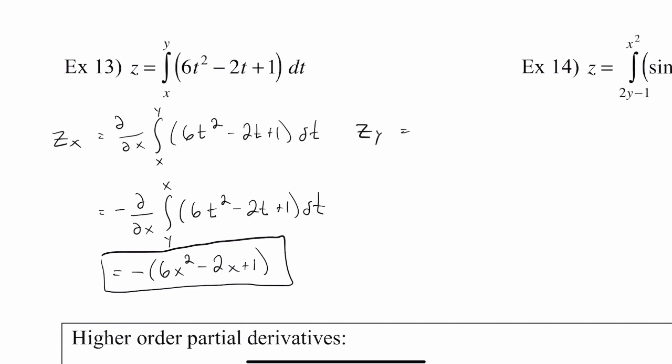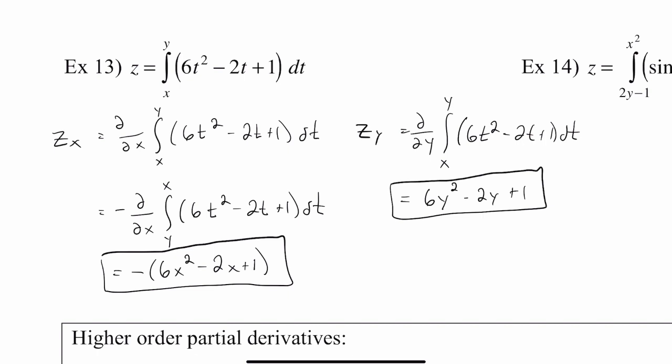Finding the partial derivative of z with respect to y will be a little bit easier, because that integral is already set up for the second fundamental theorem of calculus. The variable we're taking the derivative with respect to is already on top of the integral. The variable on the bottom, the x, has been treated as a constant. So just go through and replace all the t's with y's, and that is your final answer.